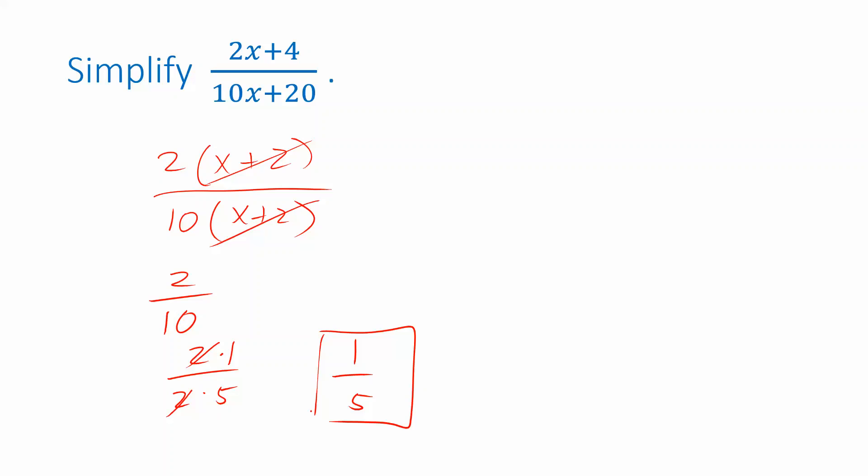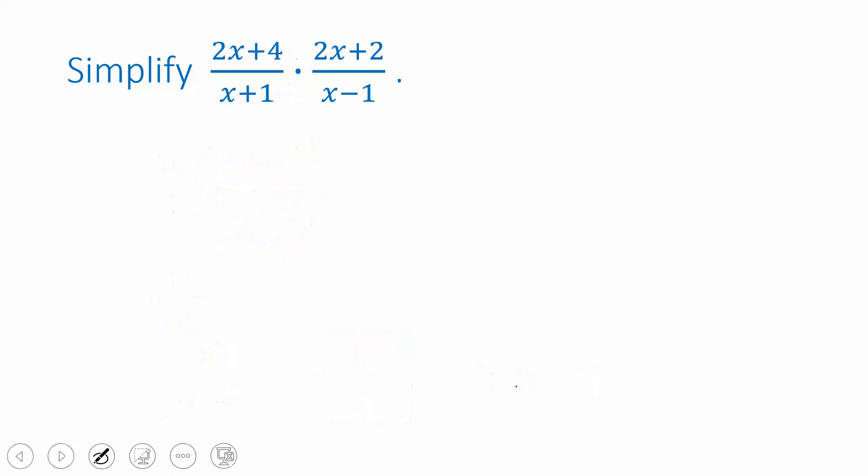And if you wanted to make sure that you were writing down your restrictions, well, notice that in the original expression we were not able to plug in negative 2 because that would have made this factor 0. So x cannot be negative 2. I'm going to skip writing down the restrictions for the remainder of these examples so that we can focus on the simplifying aspect of it.